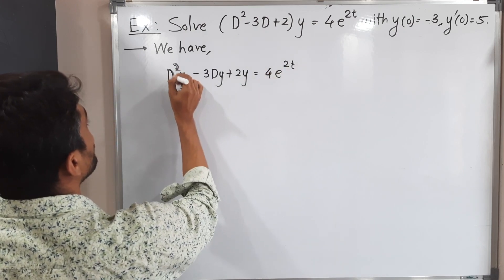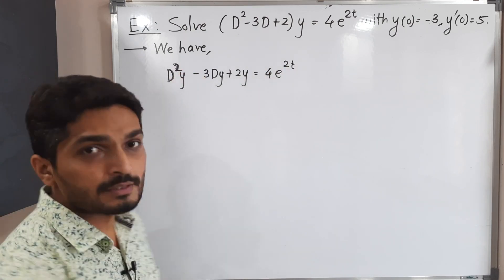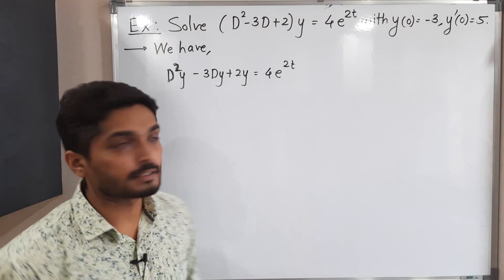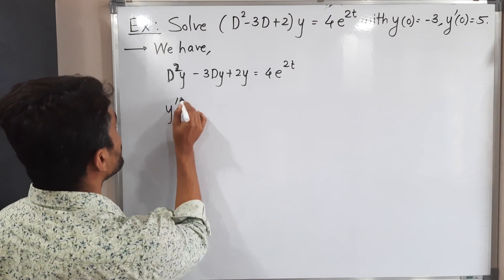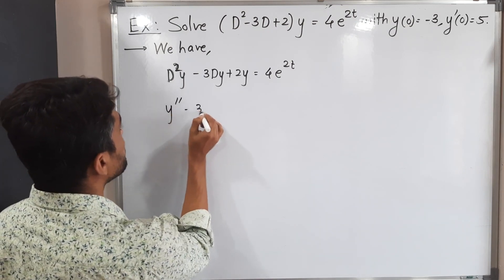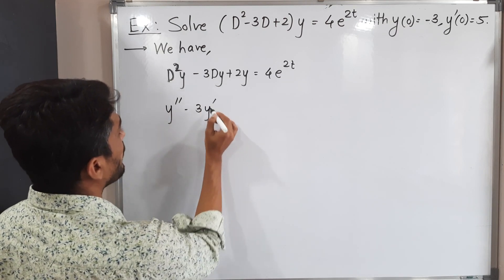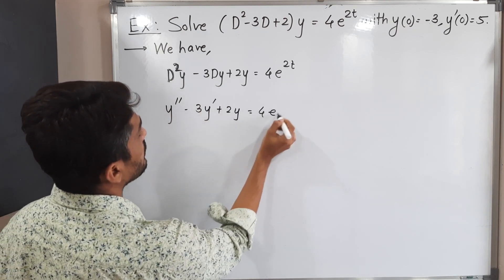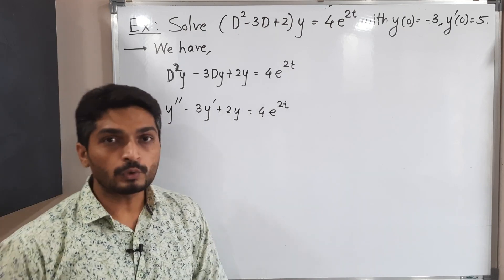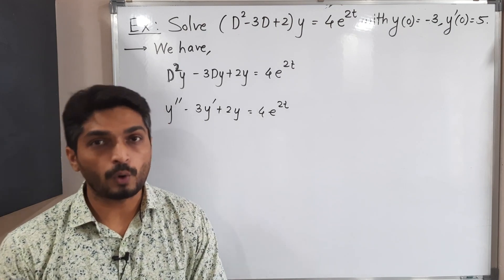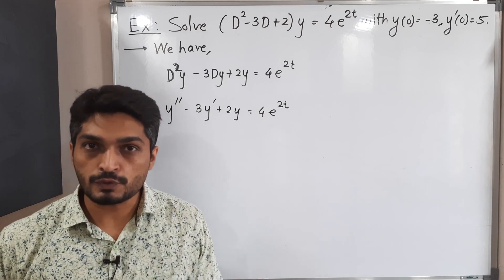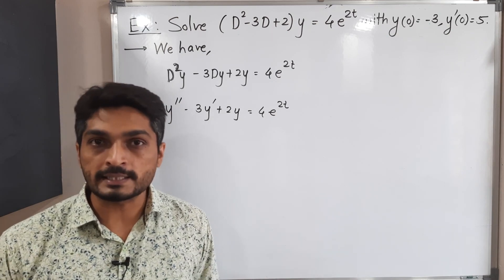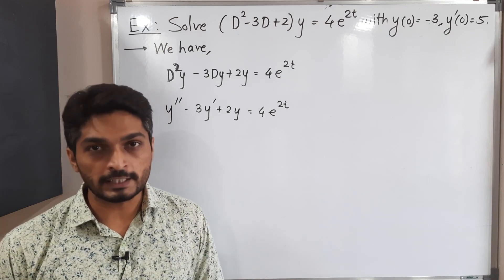Here d² means double derivative of y, so the same equation can be written as y'' - 3y' + 2y = 4e^(2t). We solve this by first taking the Laplace transform, simplifying, and then taking the inverse Laplace transform to get the final answer.